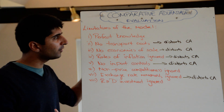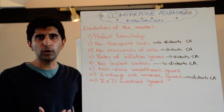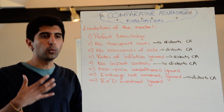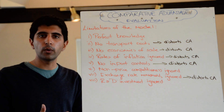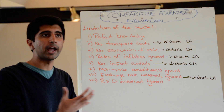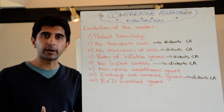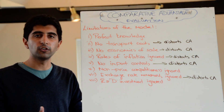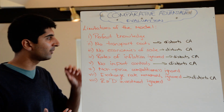Well, one: the model assumes there is perfect knowledge. It assumes that consumers will always know where the lowest prices are and will always buy where the lowest prices are. That's not always true in the real world — consumers may not have that information.